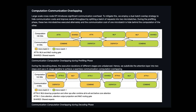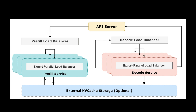To keep all GPUs busy, DeepSeek R1 uses three main load balancers. First, the pre-fill load balancer balances core attention computation so no single GPU is stuck with the biggest prompt. Second, the decode load balancer balances KV cache usage and request count, since some users have extremely long contexts that can bog down a GPU. Third, the expert parallel load balancer distributes experts themselves, ensuring that hotter experts — those triggered more frequently due to the model's routing patterns — are spread across different GPUs.